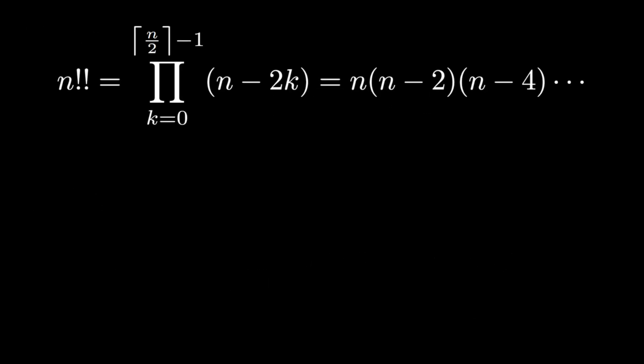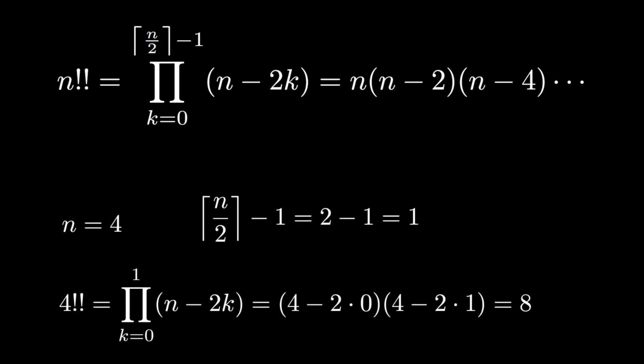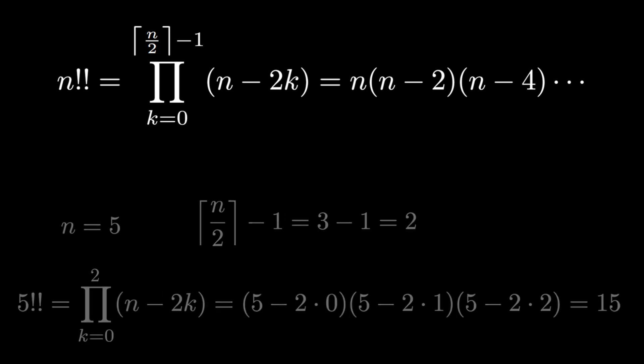The double factorial is also expressible as a single formula using the ceiling function. For example, when n equals 4, the ceiling of n over 2 minus 1 is 1, and the formula evaluates to 8. When n equals 5, the upper limit becomes 2, and the product gives 15.